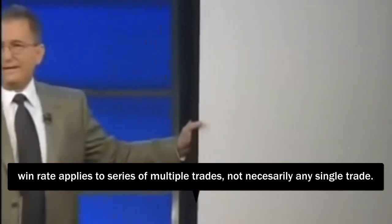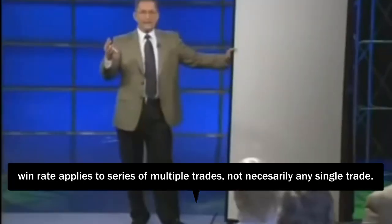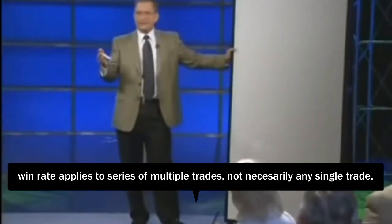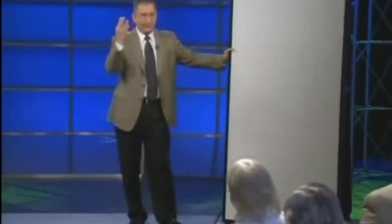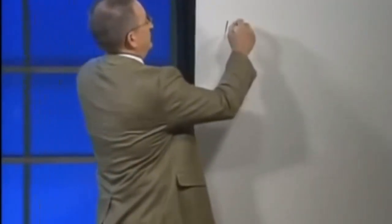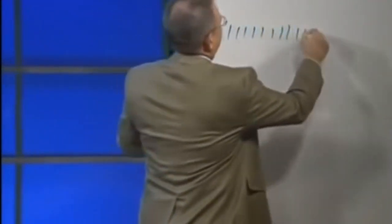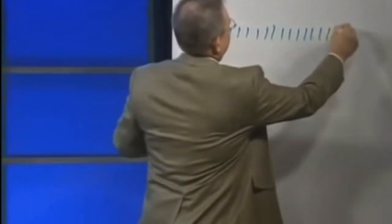If I take the same criteria that's in any kind of mathematical technical formula, or a technical price pattern that you would be able to see visually, what we're going to learn is that my edge, meaning a higher probability of one thing happening over another, is simply going to give me a higher win rate over a series of trades. Let's say the next 20 trades: 1, 2, 3, 4, 5, 6, 7, 8, 9, 10, 11, 12, 13, 14, 15, 16, 17, 18, 19, 20.